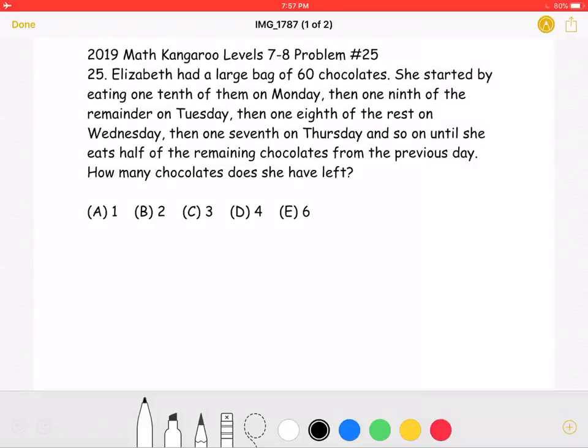How many chocolates does she have left? A, 1, B, 2, C, 3, D, 4, or E, 6?